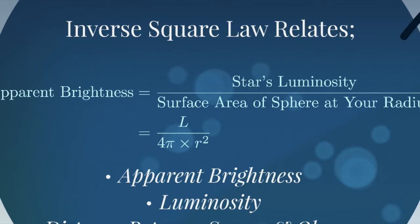So the apparent brightness, we find, is equal to the star's luminosity divided by the surface area of a sphere at your radius. So all the light produced in the star is shining on the surface area of that sphere. And you are just seeing a little piece of it.